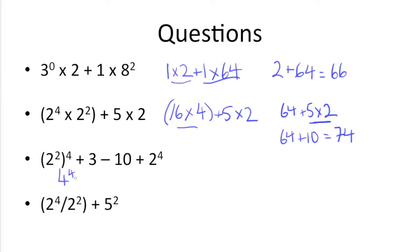Now you could do this this way, or if you remember some of the shortcuts regarding exponents, you could take 2 squared and multiply the exponent 2 by the exponent on the outside here, 4, which would get you 2 to the 8th power. 2 to the 8th power is the same as 4 to the 4th power, so either way you'll get the same answer. So just moving forward with 4 to the 4th power, plus 3 minus 10 plus 2 to the 4th.